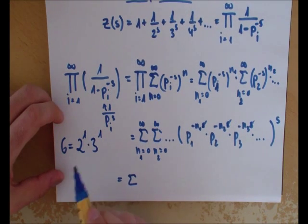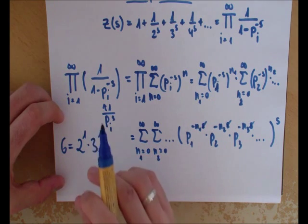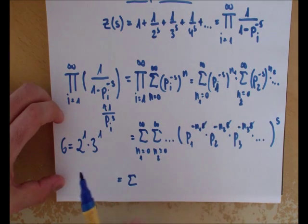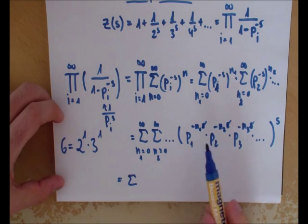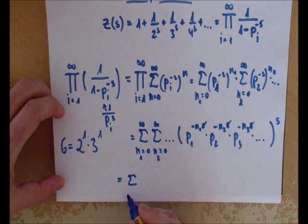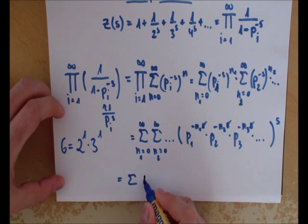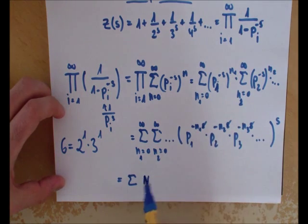You can do this for any kind of number—you can factorize this into prime numbers as a product. Any integer number can be written as a product. If you have this kind of product, what this will give you is every number n out of this, with all the combinations.